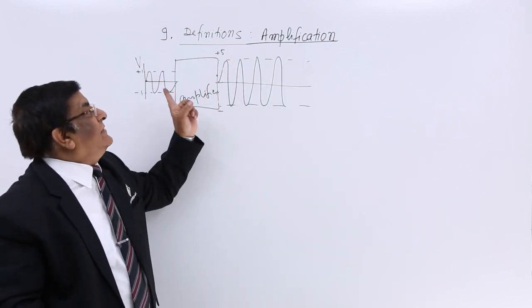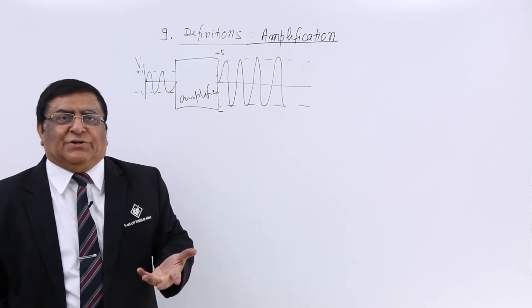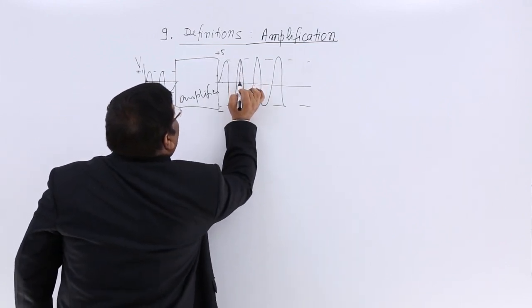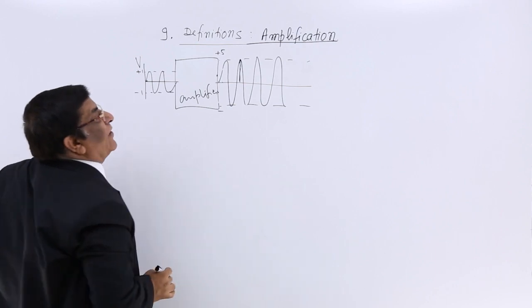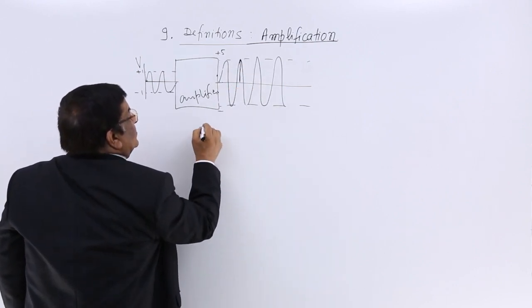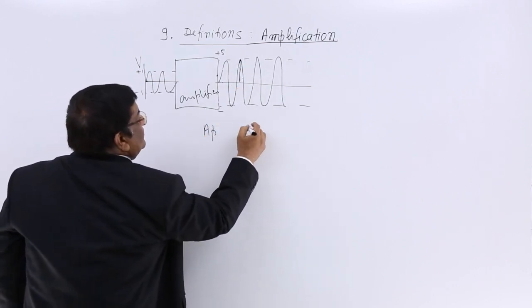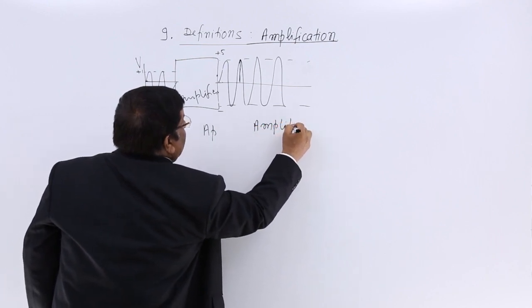So, this is known as amplification. What do we call this property in the wave terminology? We call it amplitude.